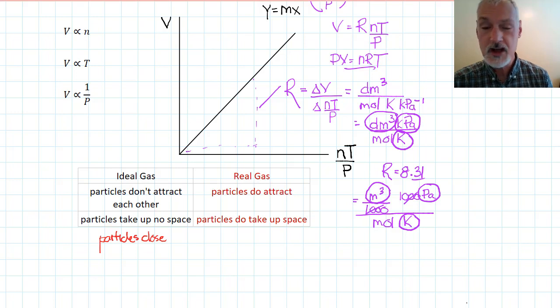So, if we can get our particles close, these factors start to falter. What conditions cause the particles of a gas to be close to each other? If I make my temperature really low, and I allow the particles to slow down, then they start to attract each other. And also, if I make the pressure really high, then the particles will start to take up a considerable amount of space inside the container.